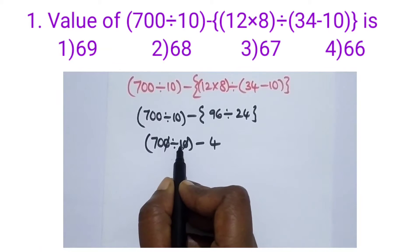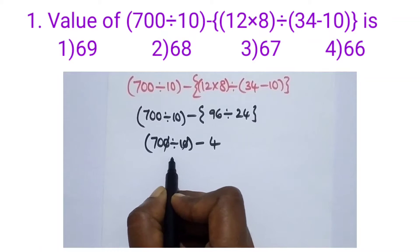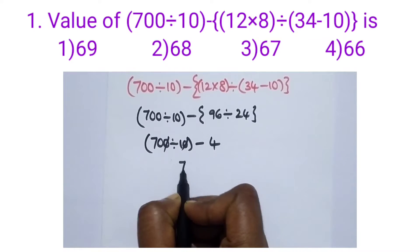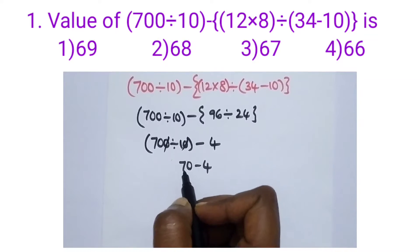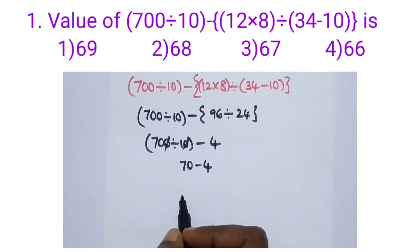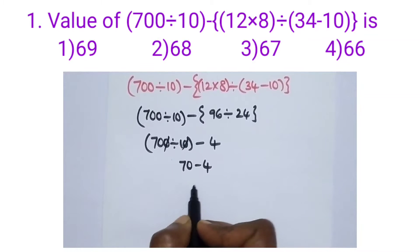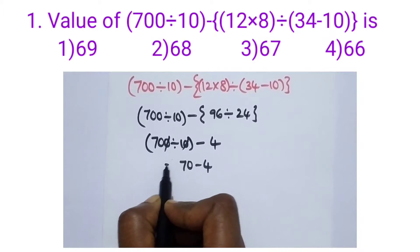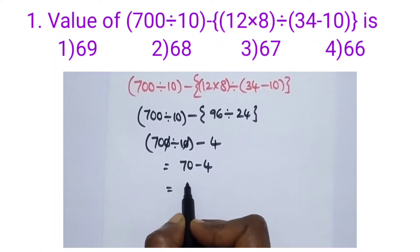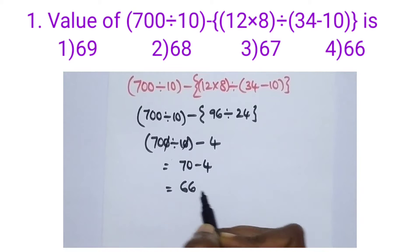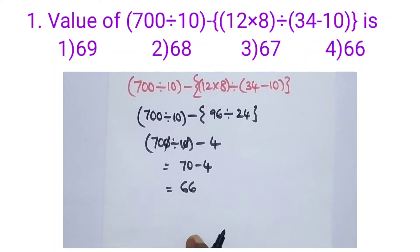700 divided by 10 simplifies to 70 divided by 1, which equals 70. So 70 minus 4 equals 66. Option 4 is the right answer for this question.